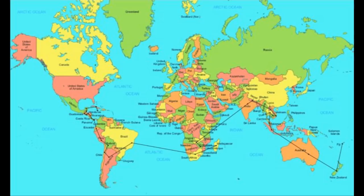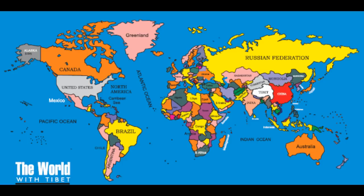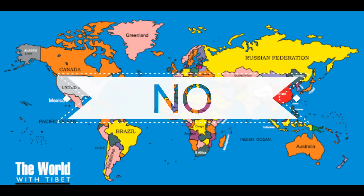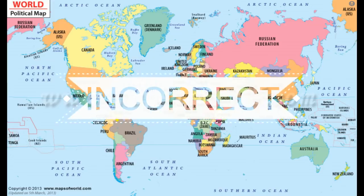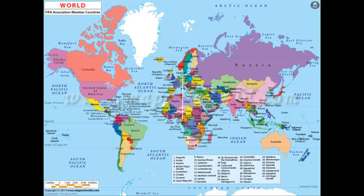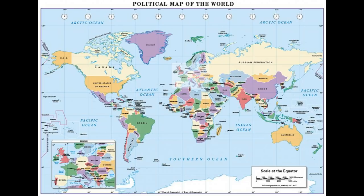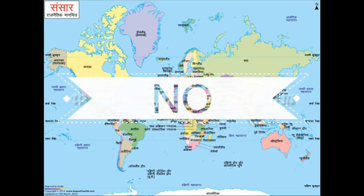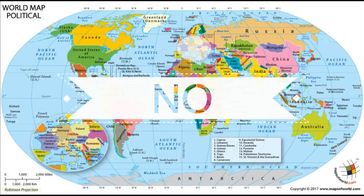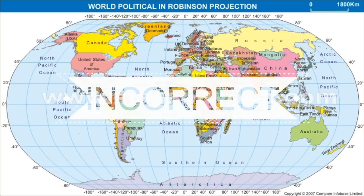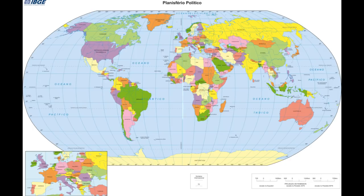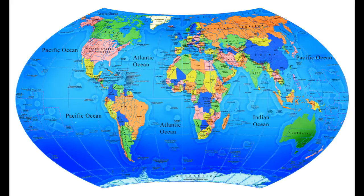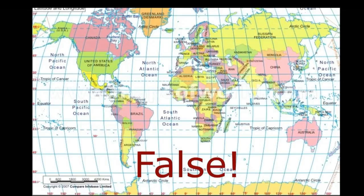Welcome friends. Today's topic of discussion is the correct world map. Have you ever seen the map of the world? Here is the map of the world — is this the true map? No, it's not true, it's not correct. This one is also not correct, and this one is also not the correct form of the world map. This is also not correct — it looks like a spherical world but it is not, technically. This is also not a correct map, and this is also a false map.